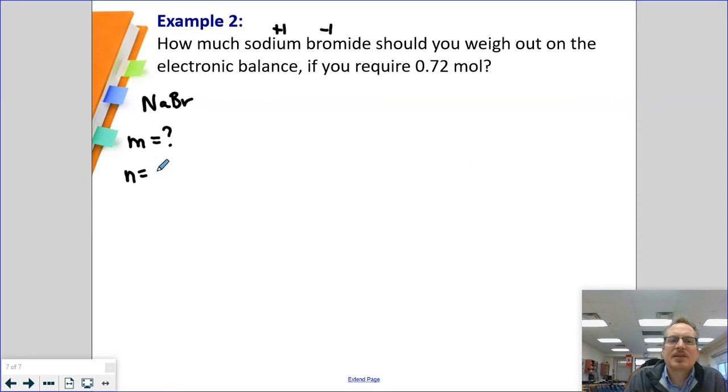My moles, it tells me in the question, is 0.72. My molar mass, we're going to calculate. So we're going to add together sodium, which is 22.99, and we're going to add it to bromine, which is 79.90. And my molar mass is going to come out to be 102.89 grams per mole.